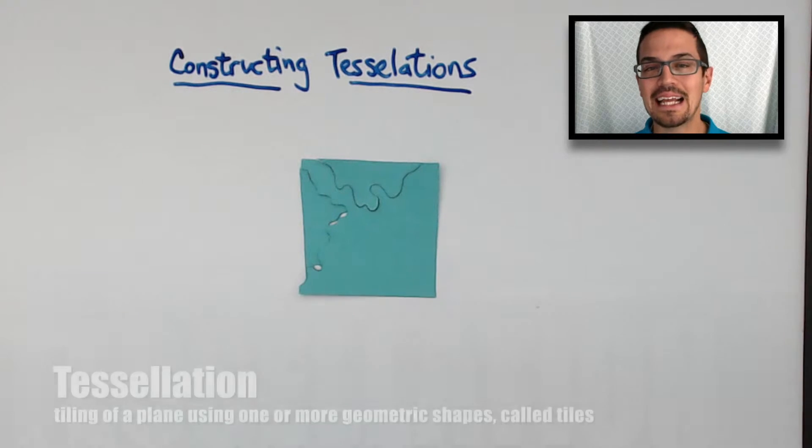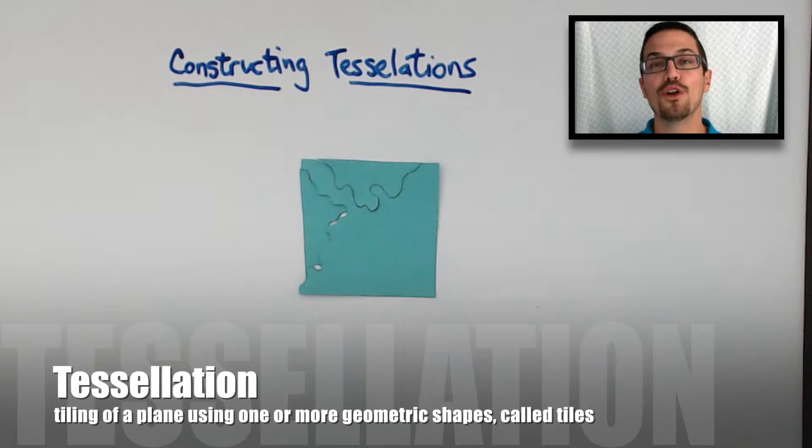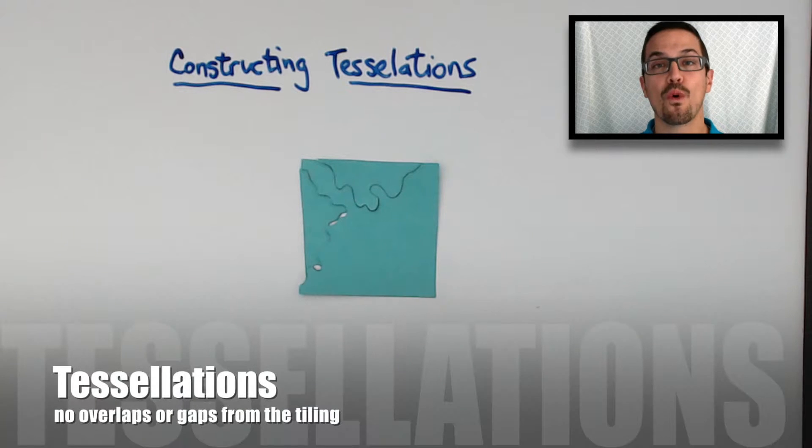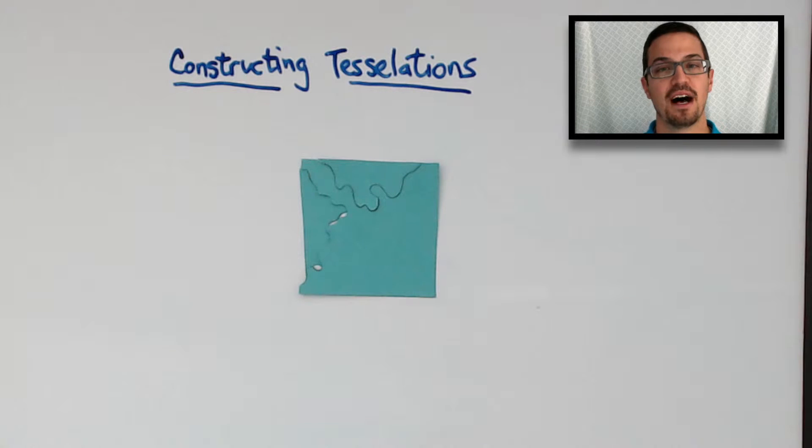A tessellation of a flat surface is the tiling of a plane using one or more geometric shapes. An important consideration with tessellations is that there are no overlaps or gaps of each of those tiles. Also, that tiling has a specific pattern that it has to follow.